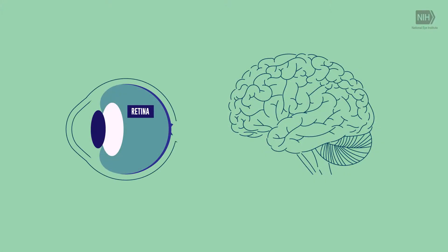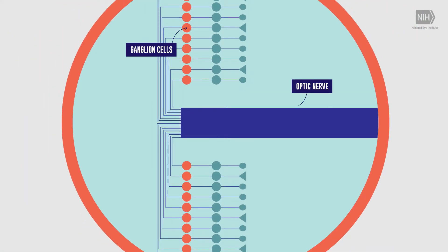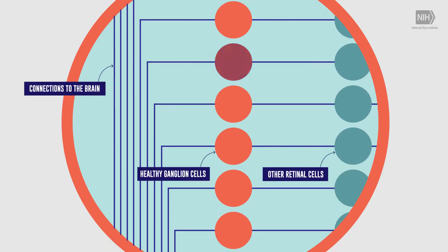I've spent my entire adult life working on the visual system. In particular, the retinal ganglion cells are the cells that connect the eye to the brain. The work that we're doing specifically for the AGI effort is to try and understand how retinal ganglion cells can be regenerated after injury.